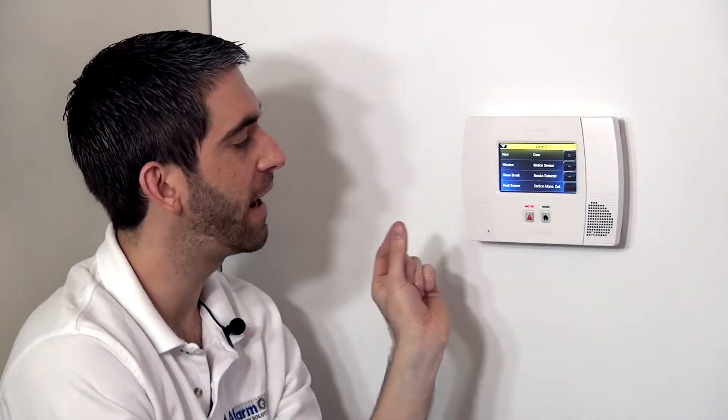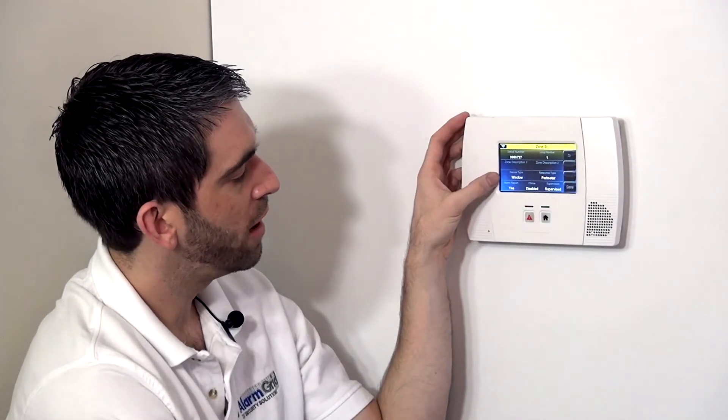In our case, we have some double hung windows and we do have the skinny frame. We didn't quite have enough frame width for a 5811, so we're going to use the skinnier 5820L. Because it's going on a window, we choose device type window. Once we're on device type, we can select our response type.